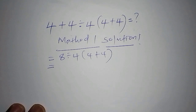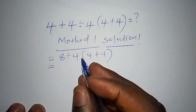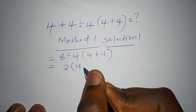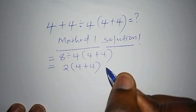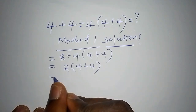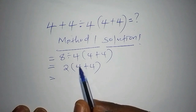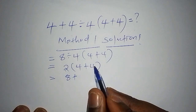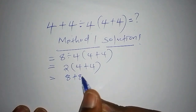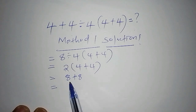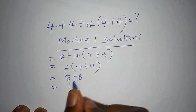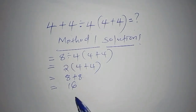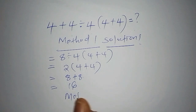We now have eight divided by four. We know that eight divided by four is two. So we have two multiplied by bracket four plus four, close the bracket. From there we have two multiplied by the number inside the bracket, which is also eight. So finally we have eight plus eight, and the answer is 16.